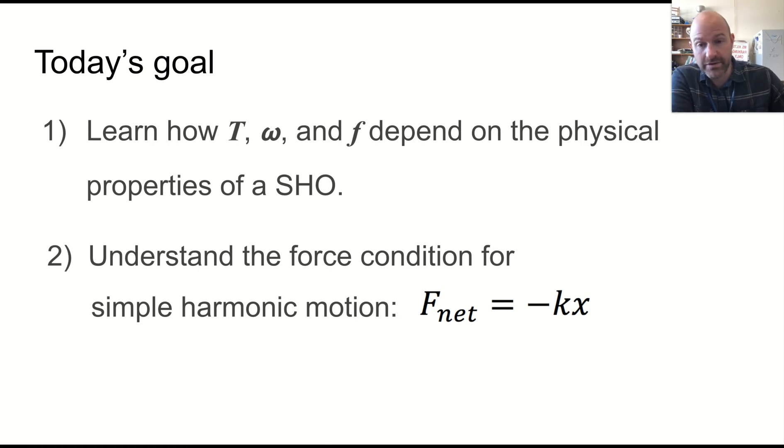So we want to learn how period, angular frequency, and frequency, which are all related to each other, depend on the physical properties of a simple harmonic oscillator. In other words, what physical things can we change and therefore change the period? Now, we investigated this in our simple harmonic oscillator inquiry lab with a simple pendulum and a mass spring system. But we want to formalize this by doing some kind of mathematical derivations as well.